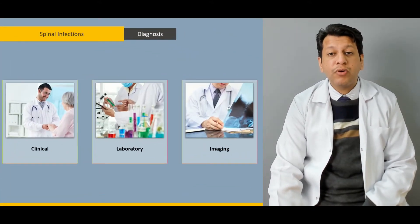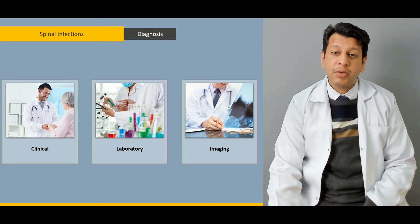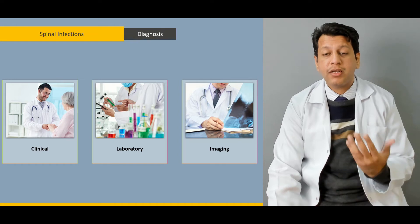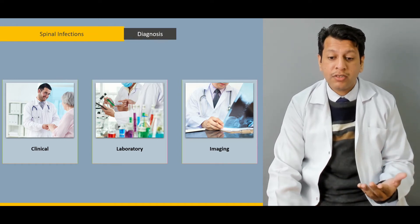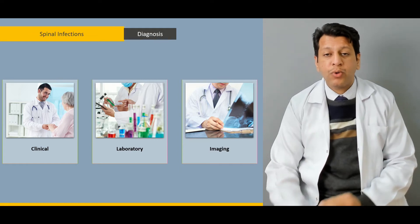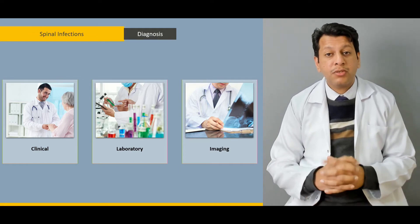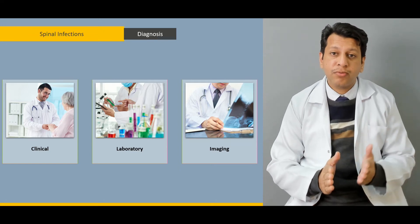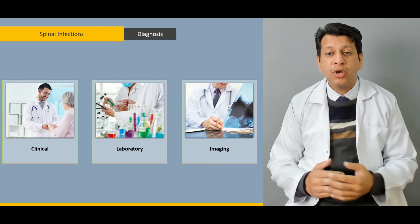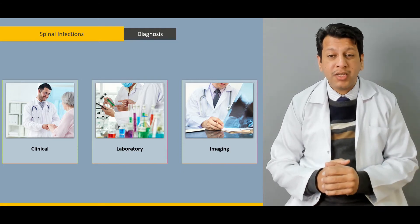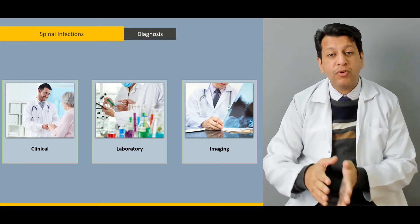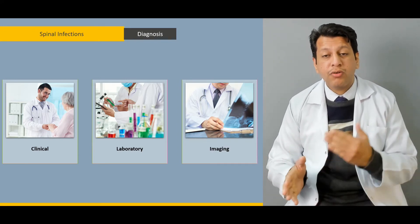From then onwards we'll move on to the signs and symptoms of spinal infection, the clinical criteria, how to take a patient's history, how to assess on examination, and what to look for in laboratory investigations. There are special tests available such as Ziehl-Neelsen staining and CSF culture for bacterial infection, as well as blood tests including CBC, ESR, and CRP.